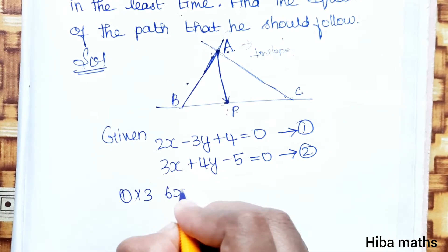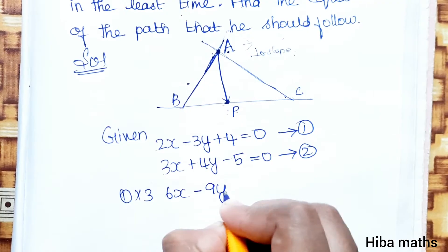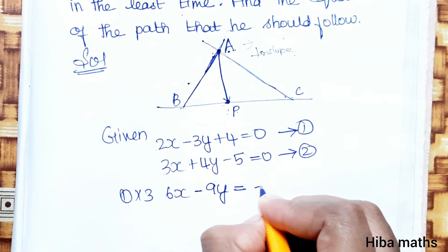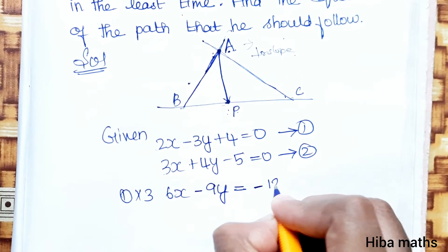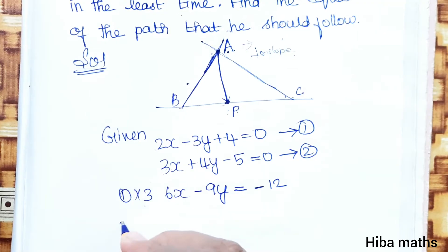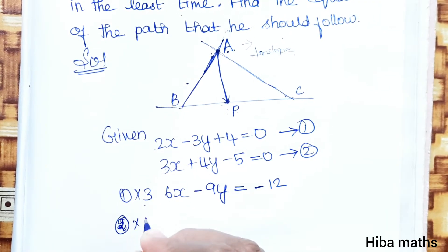To solve simultaneously, multiply the first equation by 3 and the second equation by 2. This gives 6x minus 9y plus 12 equal to 0, and 6x plus 8y minus 10 equal to 0. Then add the second equation multiplied by 2: 6x plus 8y minus 10 equal to 0.